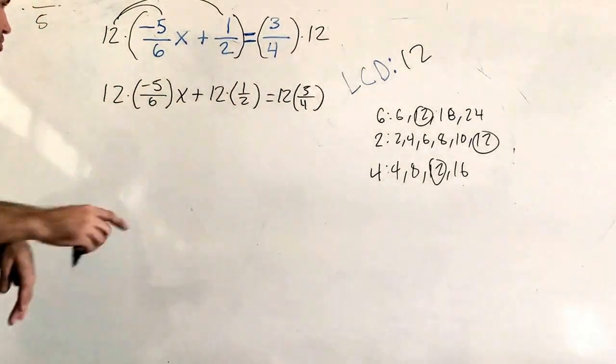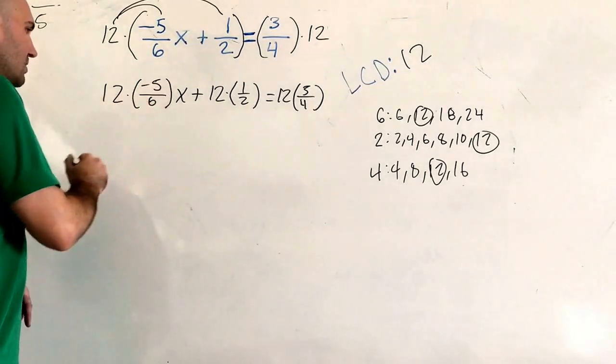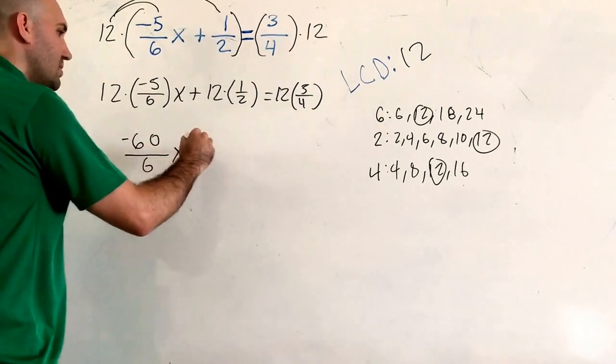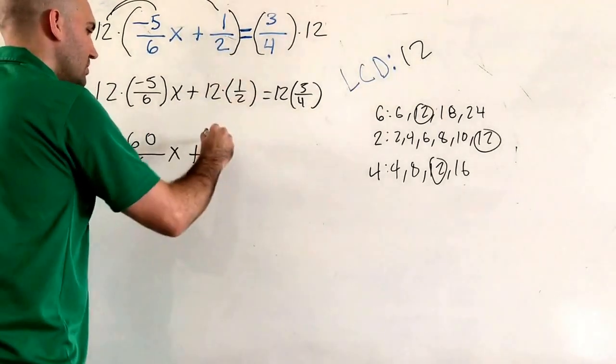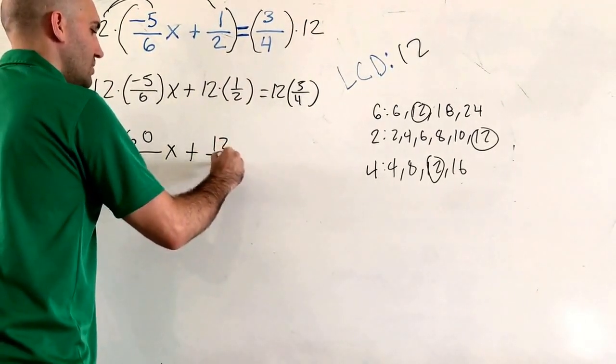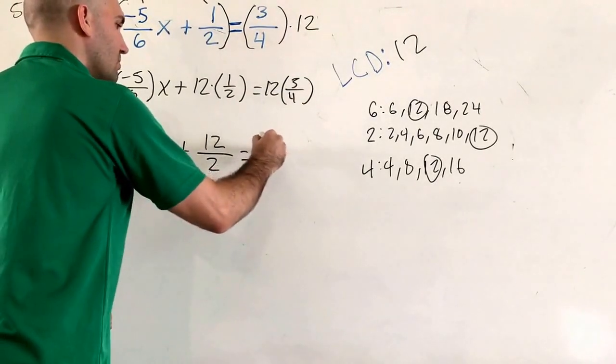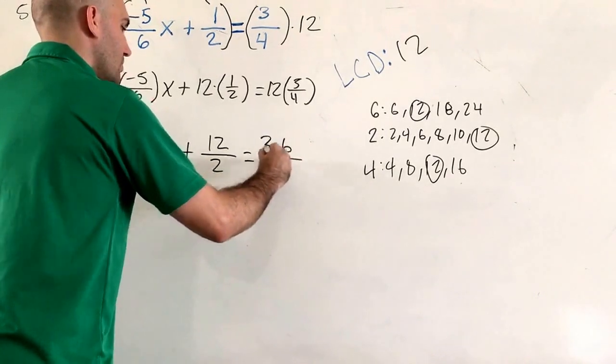So now let's do some more math. 12 times negative 5 is going to be negative 60 over 6x plus 12 divided by 2 equals 12 times 3, which is going to be 36 over 4.